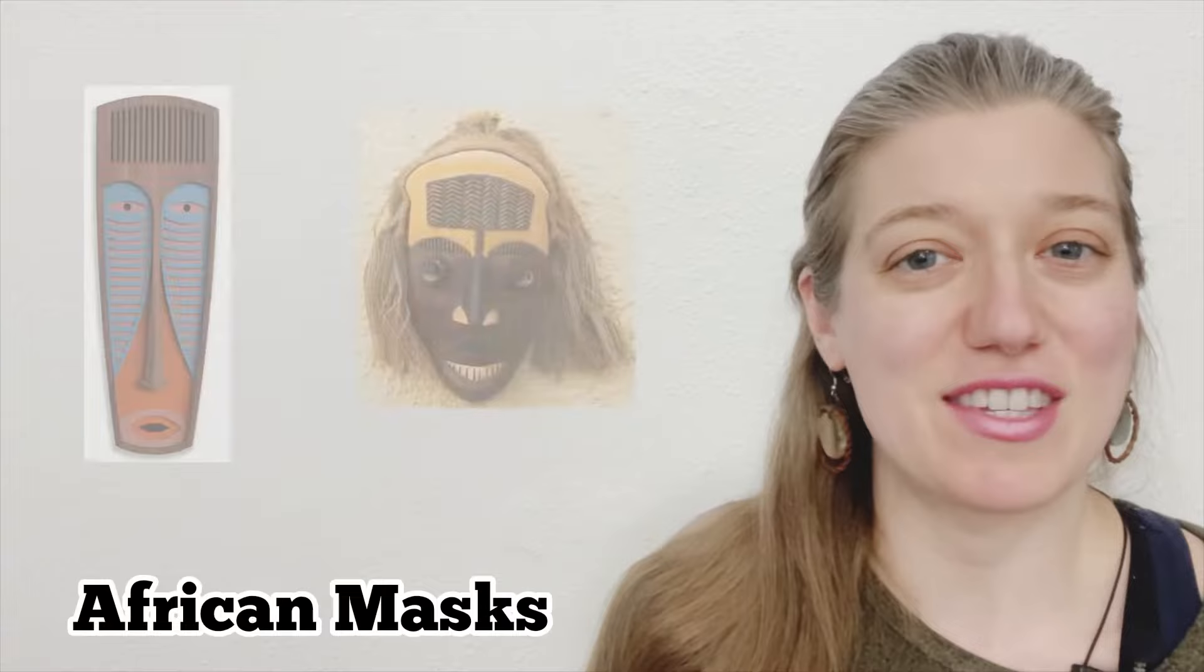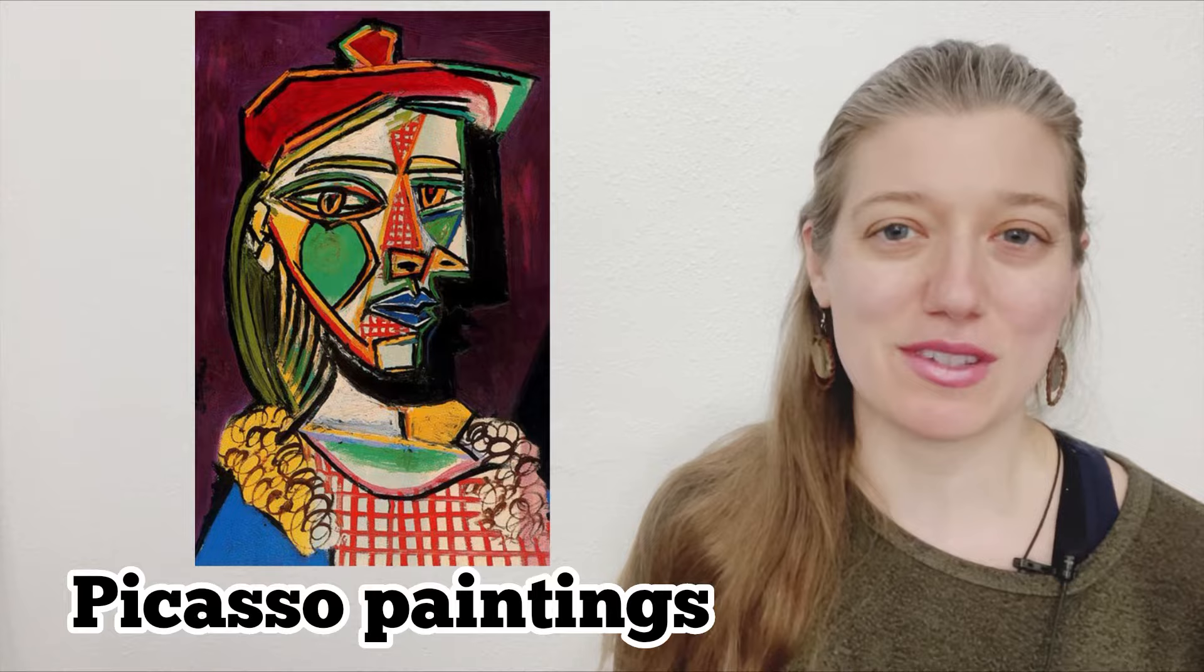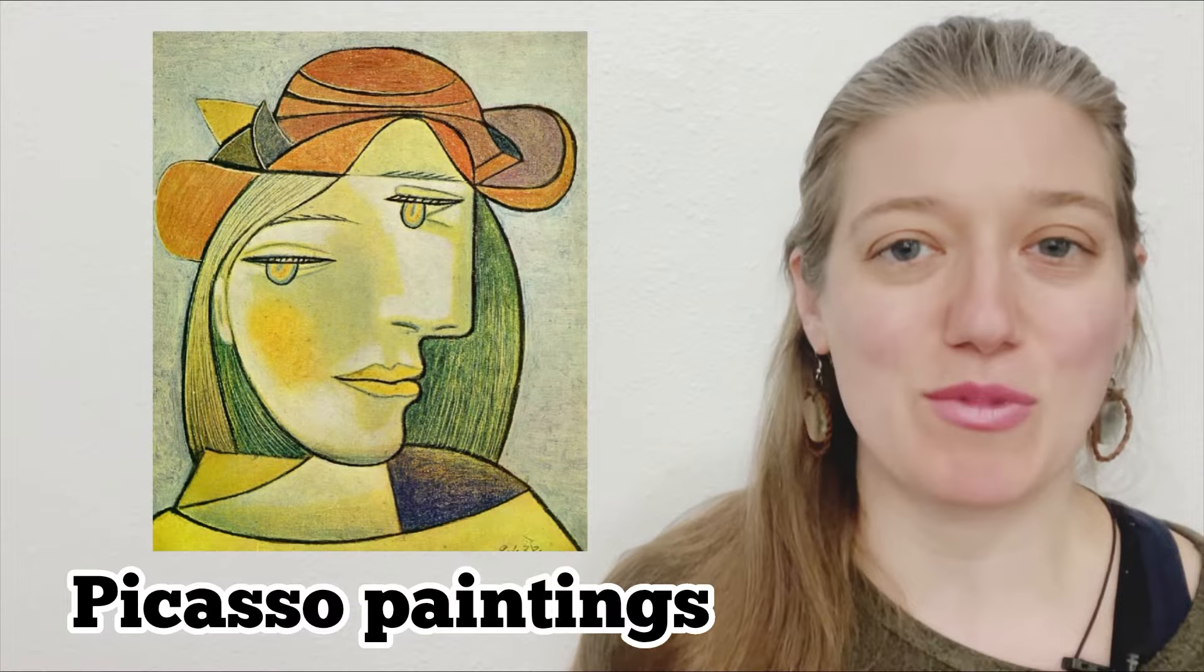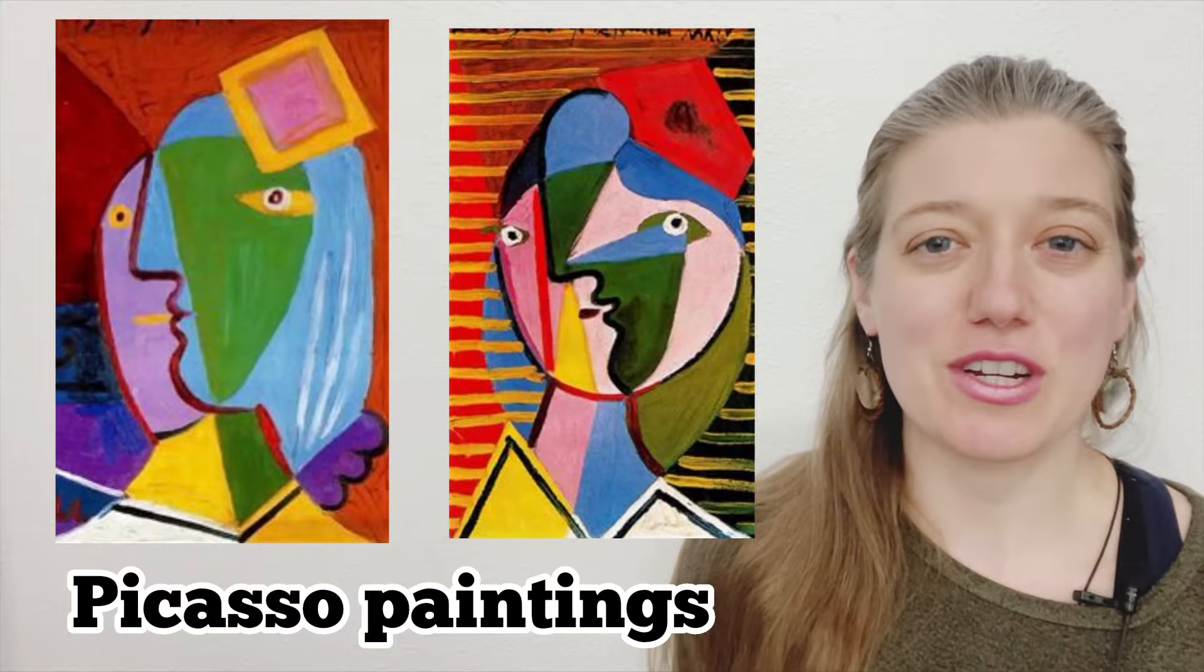Similar to African masks, cubist portraiture breaks down the face into simplified geometric shapes. These fragmented shapes often depict multiple viewpoints simultaneously. Instead of attempting to depict an object in a realistic manner such as you would see in a photograph, cubist artwork simplifies and distorts an image to capture its essence.